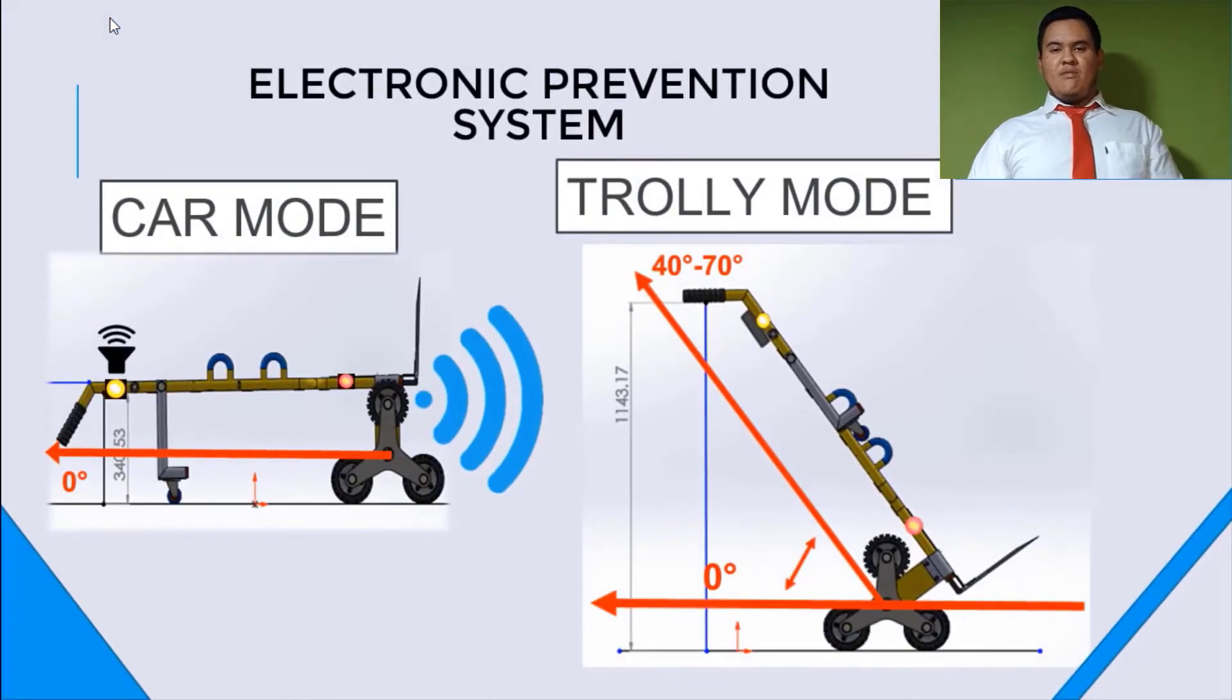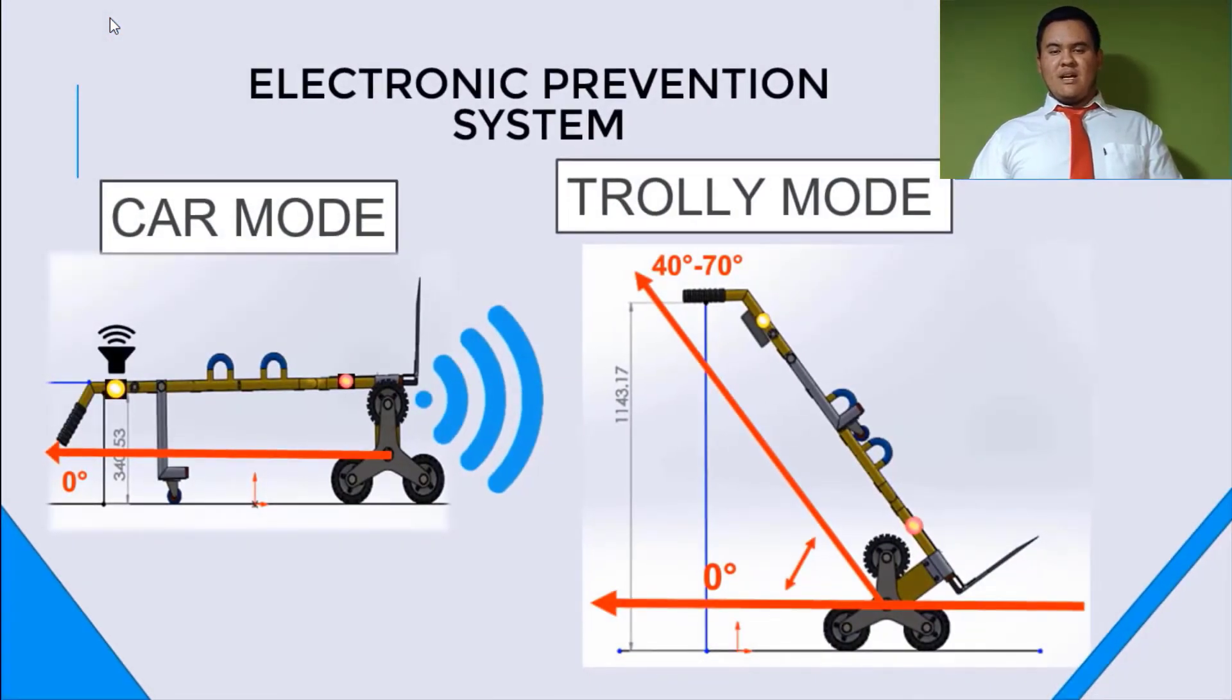Electronic prevention system. We have two systems installed in the trolley. The first is when the trolley is used in the car mode. When it is used in this mode, we have in the front one sensor to detect the distance between the objects. If the object is very closer to the trajectory of the car, it will be shown with a frequency highly. If the object is closer, this tone will be variably depending on the distance.